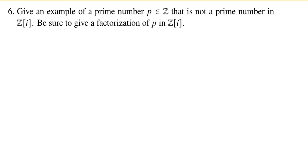This problem is asking you to find a prime number in the integers which is no longer prime when you think of it as a Gaussian integer. That is, you can't factor it over the integers, but when you go to the Gaussian integers, there is a factorization. And when I say factorization, I mean a non-trivial one that doesn't involve a unit.